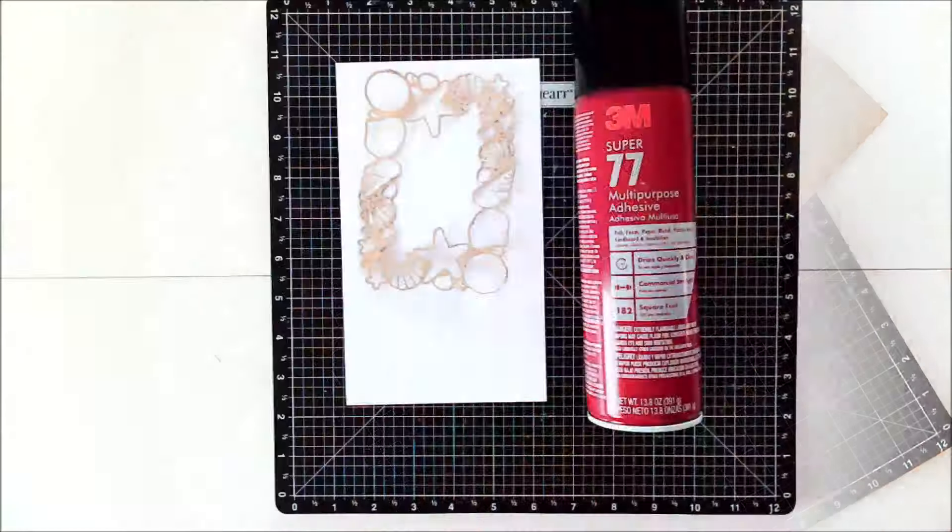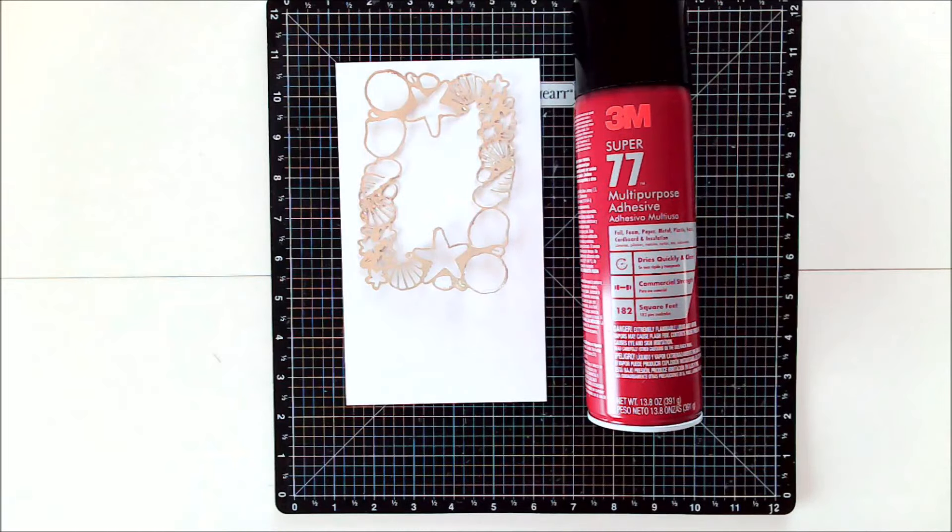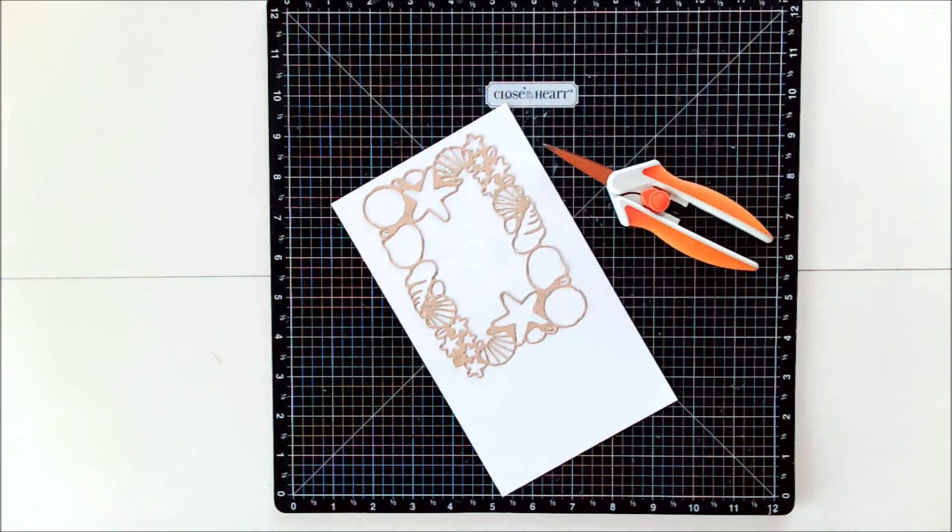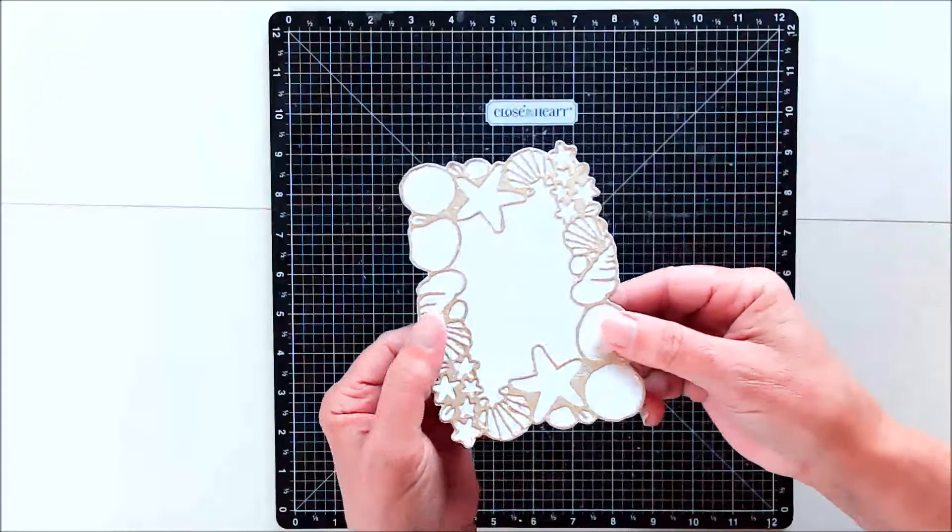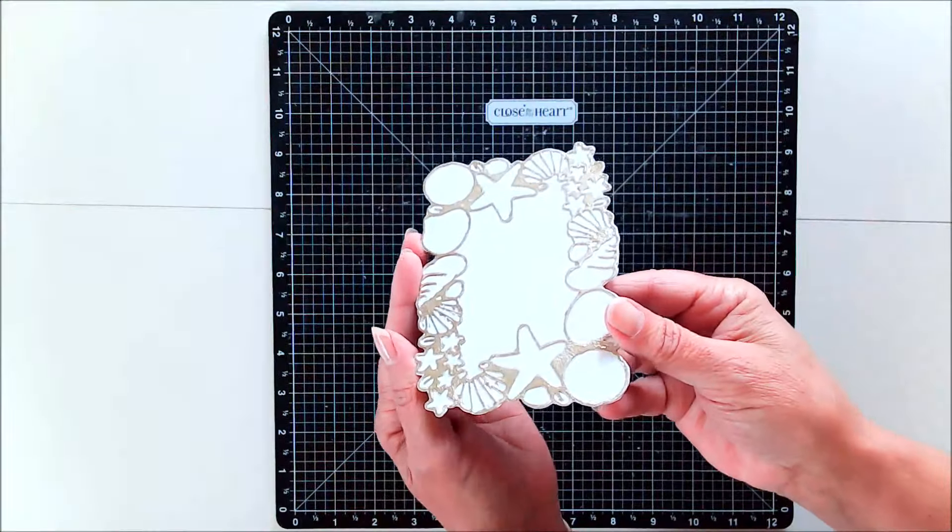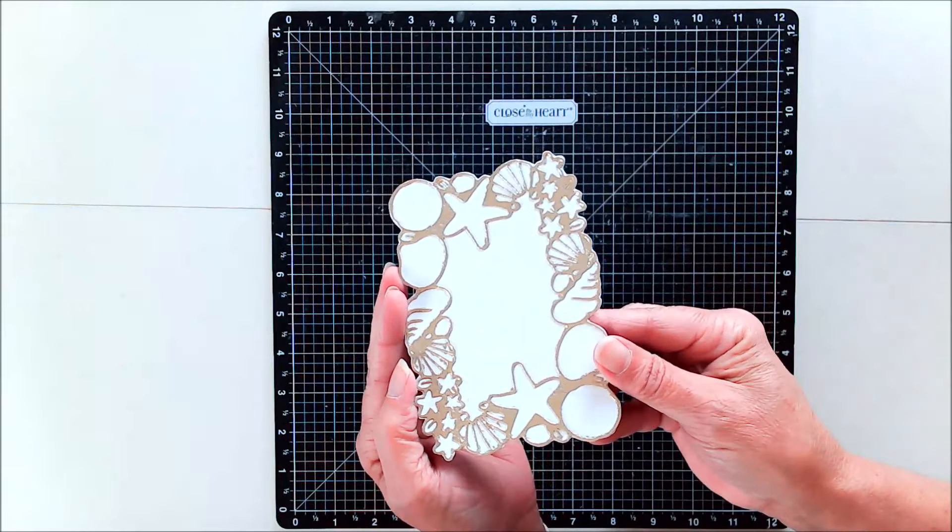And next, I'm going to be using spray adhesive, but you can use any glue that you want, and I'm adhering that piece to a piece of cardstock, and then I will cut around it. And I'm doing this to make that piece sturdier, and also to give me a backing for when I inlay the pieces back in.